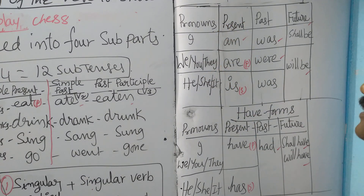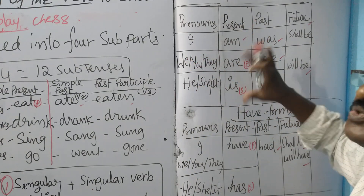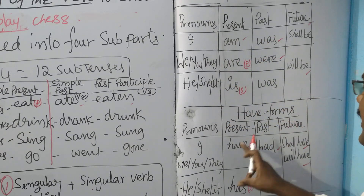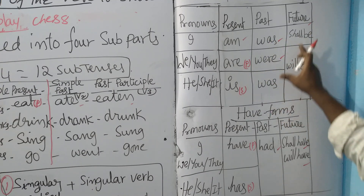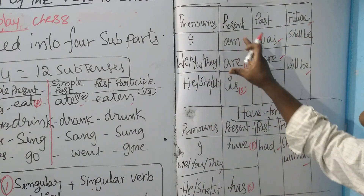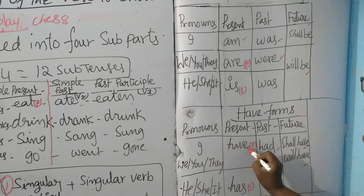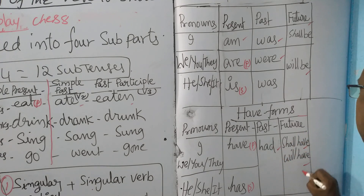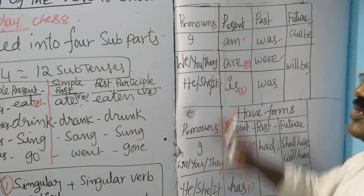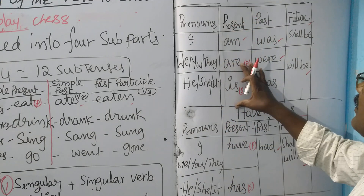For example, in continuous tenses we mix the verb with B forms: am eating, are eating, is eating (present continuous); was eating, were eating (past continuous); shall be eating, will be eating (future continuous). First, verb we have to change to 'ing' form, then add B forms before it to form continuous tenses. For perfect tenses, we use the V3 form: have eaten, has eaten (present perfect); had eaten (past perfect); shall have eaten, will have eaten (future perfect).